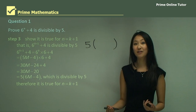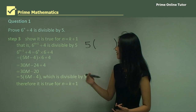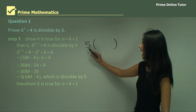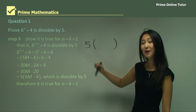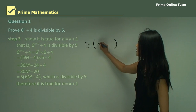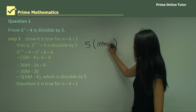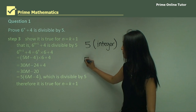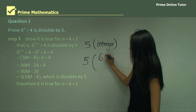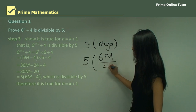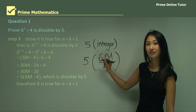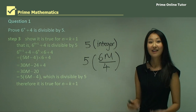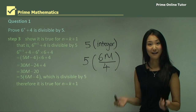Therefore it is true for n equals k plus one. Before we go on to the conclusion I want to make a point here. To show something is divisible by five, you have to be able to factorize out five, but the other important thing is that what's in the bracket must be an integer. Imagine if you had five times some fraction like 0.2 — multiply that by five and that number is not going to be divisible by five.